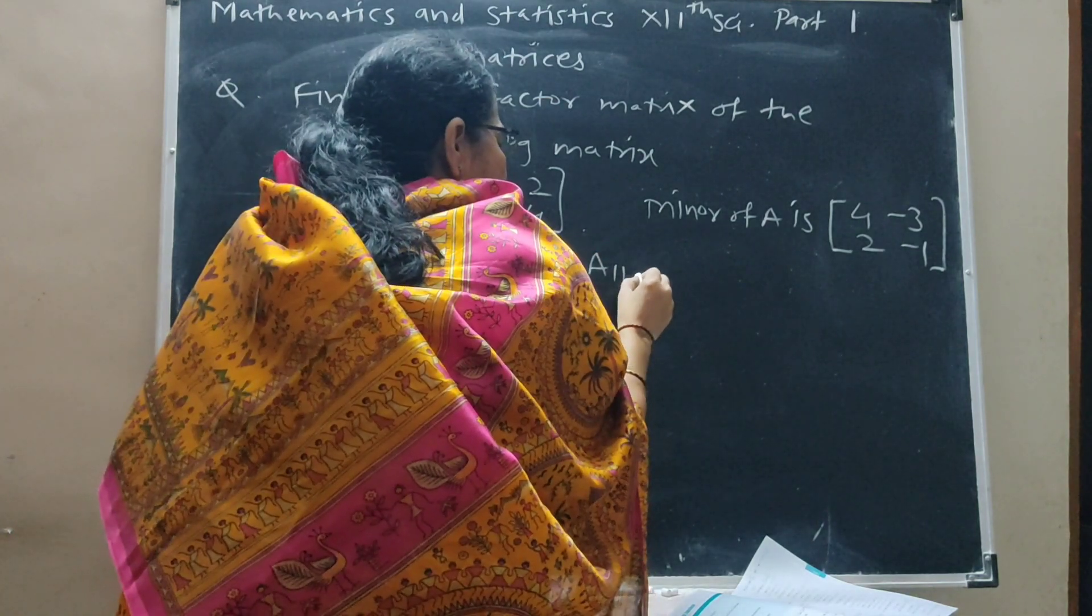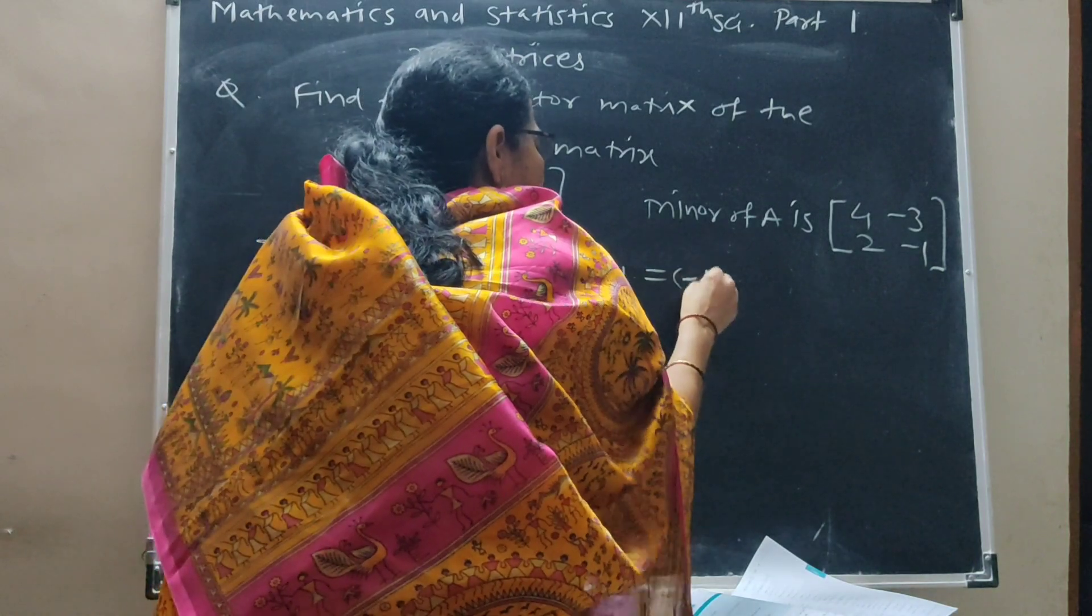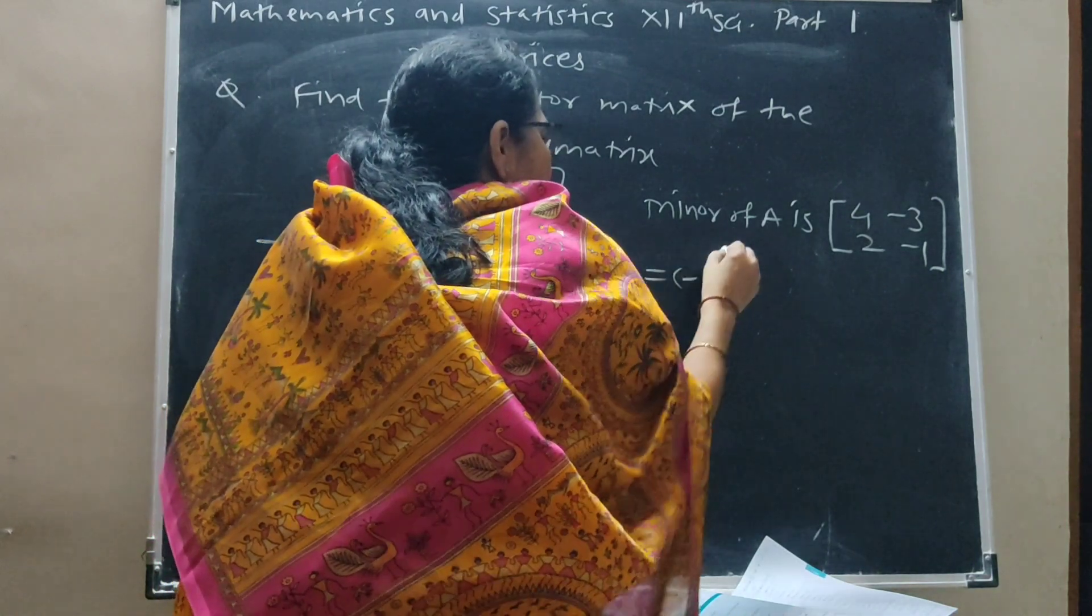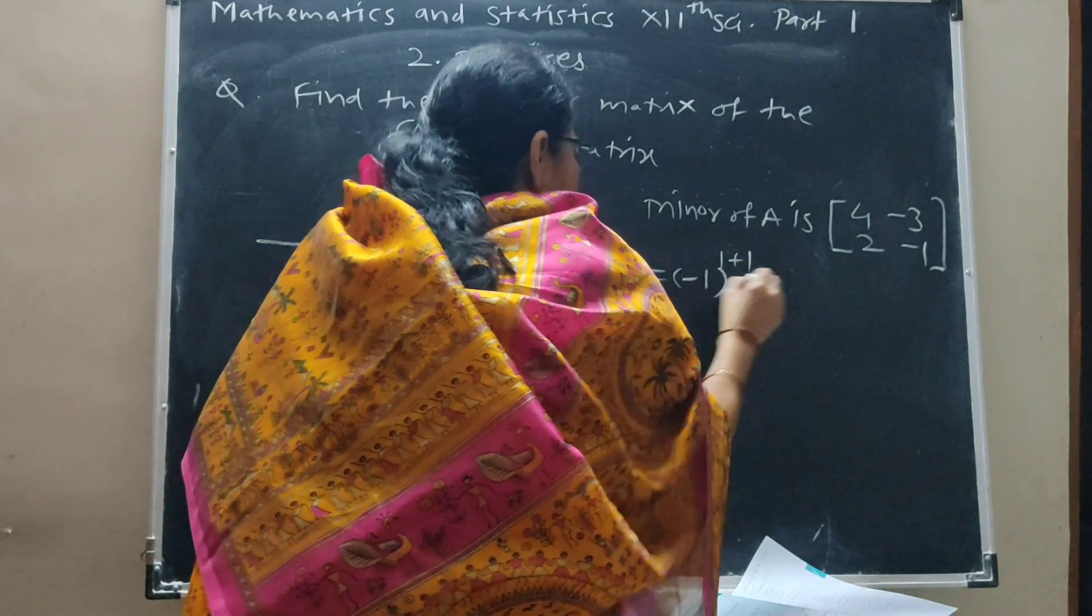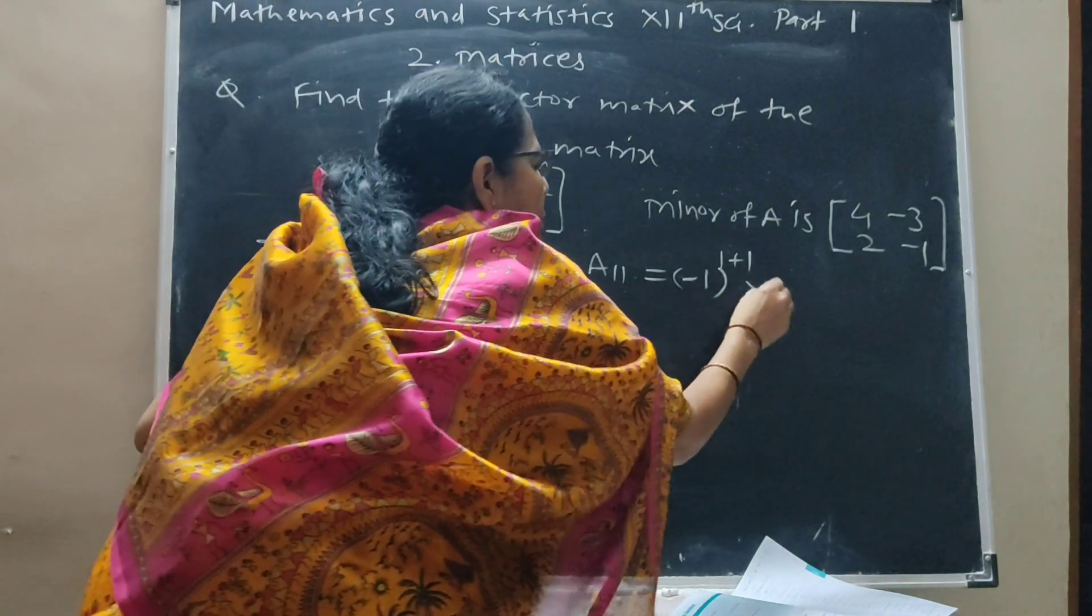A11, the cofactor element, equals minus 1 raised to 1 plus 1 times the respective minor, which is 4.